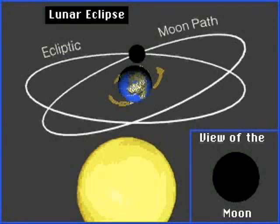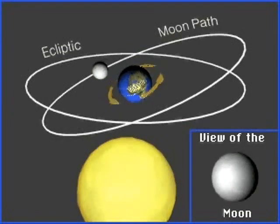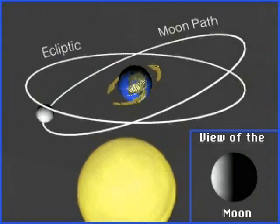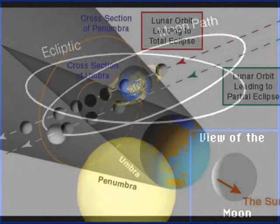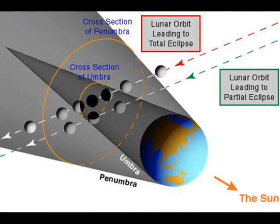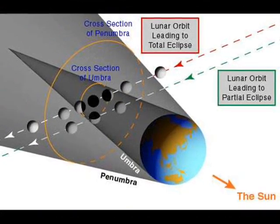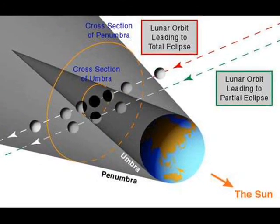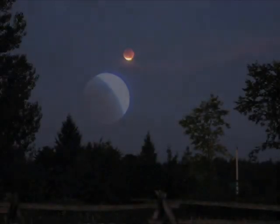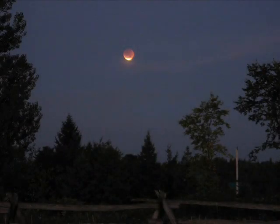Although the moon is totally covered by the Earth's ombra, it does not disappear from view. This is due to the fact that sunlight, which is bent by the Earth's atmosphere, can still reach the moon. Since red light is hardly scattered by the Earth's atmosphere, it is this light that reaches the moon, illuminating it with a coppery glow.